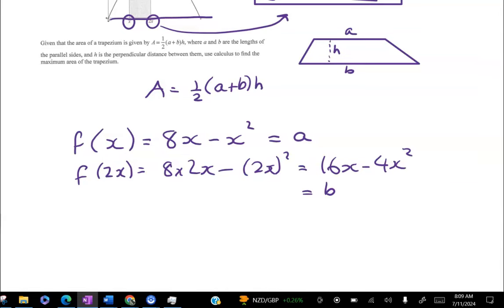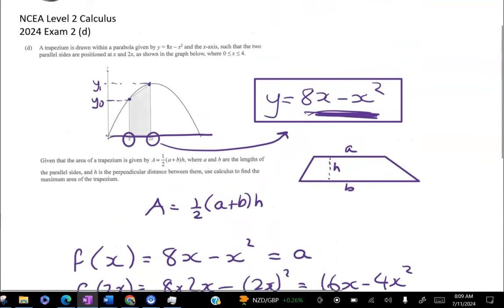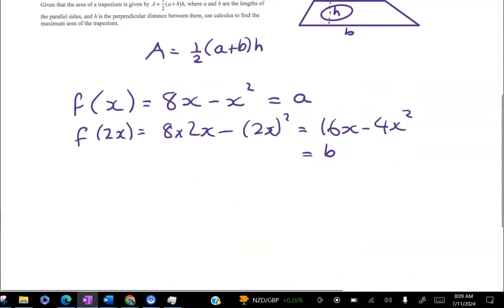And that's really the hardest part of this question. Because if you look at this distance here, which is going to be my h, that's just 2x minus x. So h = 2x - x = x.